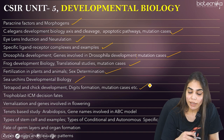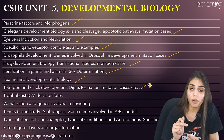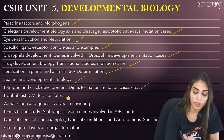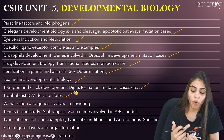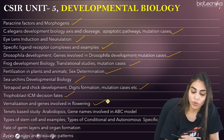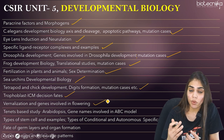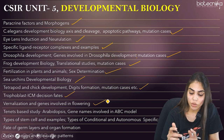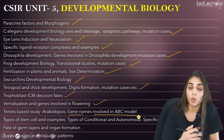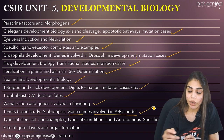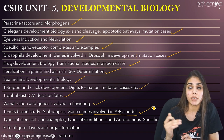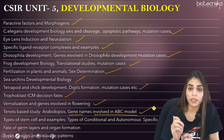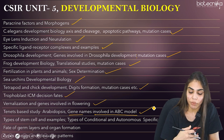The next is trophoblast and ICM lineage and fate — know which genes are on or repressed during this process. Vernalization and genes involved in flowering are also very important. Learn the ABC model of flower development, specifically what phenotype results if a class C gene is mutated. Know everything about the A, B, C, D, E model of flower development.